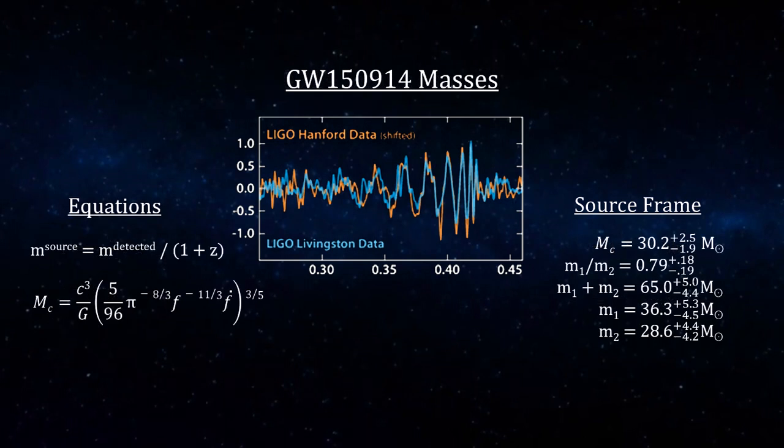The frequency data also gives us the chirp mass. Taking the redshift information gleamed from the merger and ringdown portions of the waveform, we get the binary system masses.